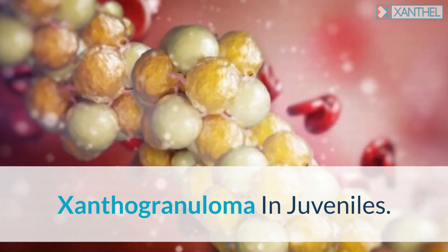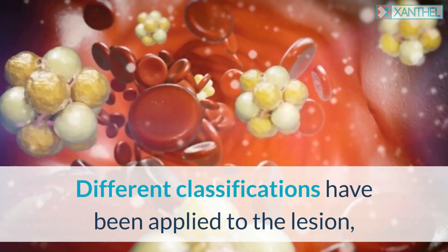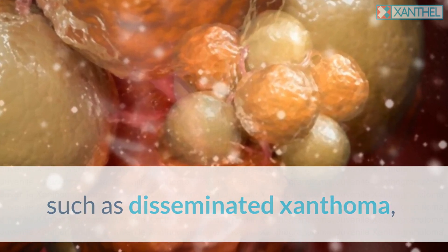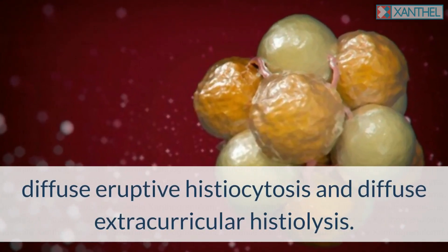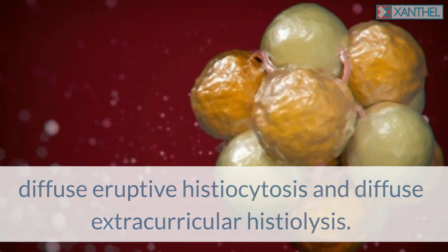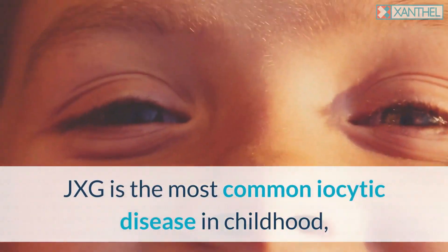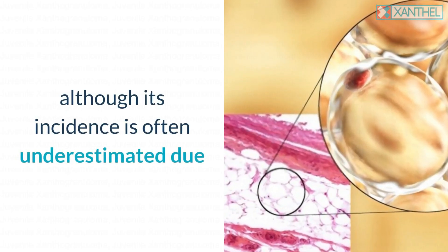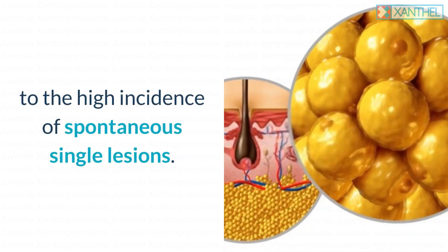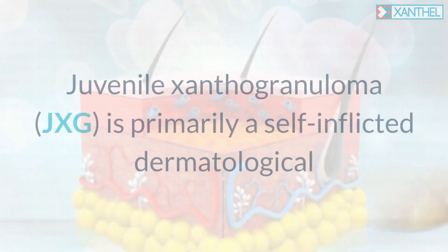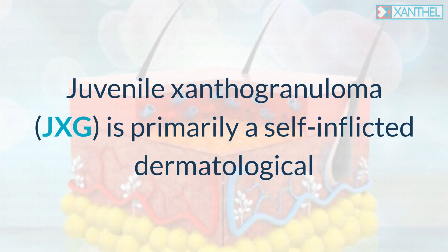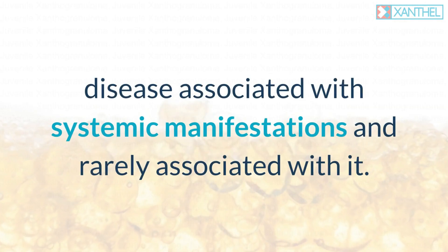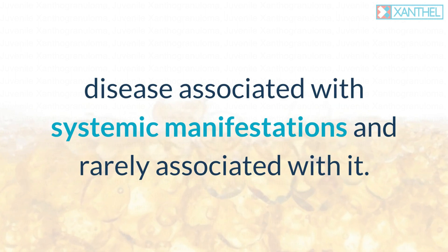Different classifications have been applied to JXG lesions, such as disseminated xanthoma, diffuse eruptive histiocytosis, and diffuse extracutaneous histiolysis. JXG is the most common non-Langerhans cell histiocytic disease in childhood, although its incidence is often underestimated due to the high frequency of spontaneous single lesions.